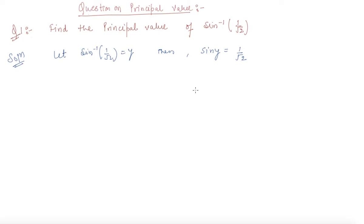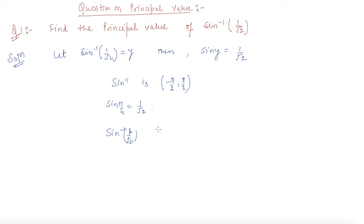So from this, sin y equals 1 by root 2. We know that the range of the principal value branch of sin inverse is minus pi by 2 to pi by 2, so our answer should lie in this range. We also know that sin(pi/4) equals 1 by root 2. Therefore, the principal value of sin inverse(1/√2) is pi by 4, since pi/4 lies within the principal value branch range.